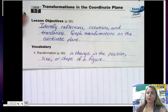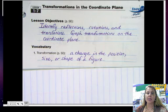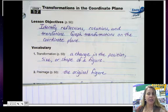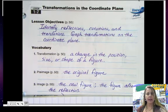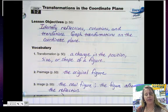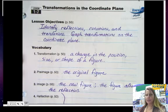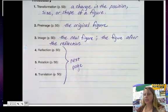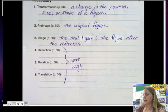First of all, what is a transformation? All it is is a change in the position, size, or shape of a figure. The preimage is the original figure, and the image is the new figure, or the figure after the reflection. For the next three, rotation, reflection, and translation, go ahead, you don't need to write it down, the definitions. Just say, see next page.